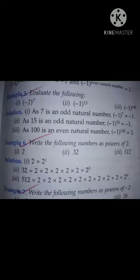Example 5, evaluate minus 1 raised to the power 7. Because 7 is an odd number, the answer is minus 1. Second part is minus 1 raised to the power 15. Again, 15 is an odd number, so answer is minus 1. And last one is minus 1 raised to the power 100. And because 100 is an even number, so the answer is 1.